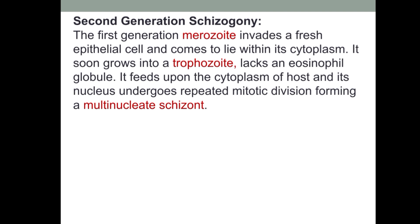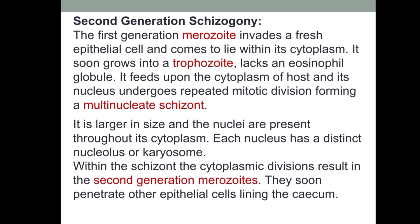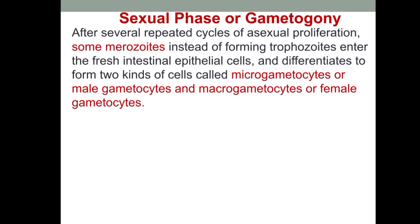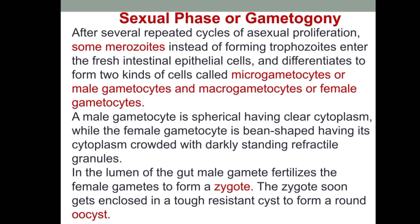In the second generation of schizogony, first-generation merozoites form trophozoites, which undergo schizogony and multiple fission to form second-generation merozoites. In the sexual phase of gametogony, after several repeated cycles of asexual proliferation, some merozoites enter fresh intestinal epithelial cells and differentiate to form two kinds of cells: microgametocytes (male) and macrogametocytes (female). The male gametocyte is spherical with clear cytoplasm, while the female gametocyte is elongated with cytoplasm crowded with darkly staining refractile granules. In the gut lumen, the male gamete fertilizes the female gamete to form the zygote, which forms the cyst.